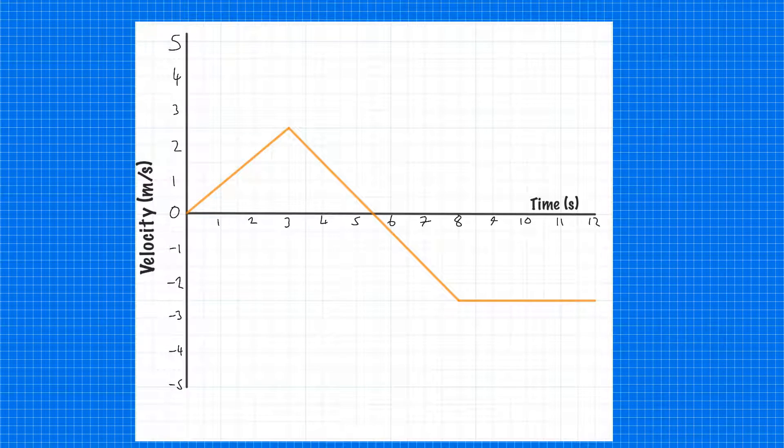The second part of looking at velocity-time graphs will cover specific examples. First, we're going to look at what happens and what it means when a velocity-time graph goes into the negative.